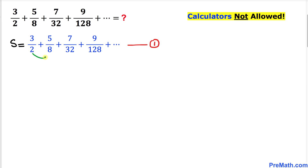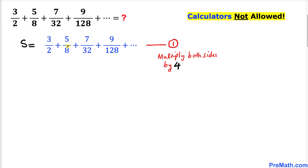We can see 2 times 4 is 8, so we multiply by 4. Likewise, 8 times 4 is 32, and likewise we multiply by 4 across the board — all these denominators are a multiple of 4 as we go along. So therefore we are going to multiply both sides by 4, on the left hand side and on the right hand side as well.